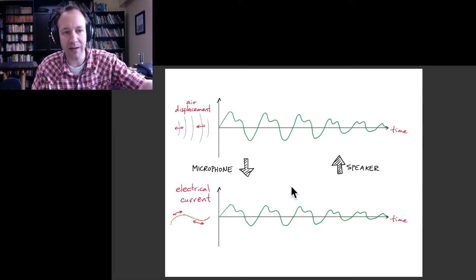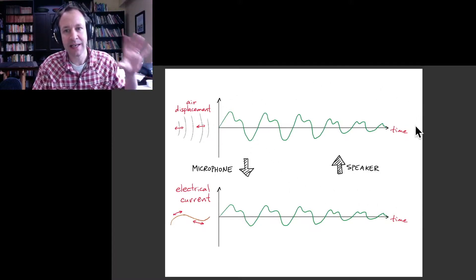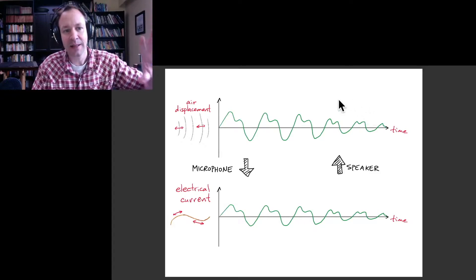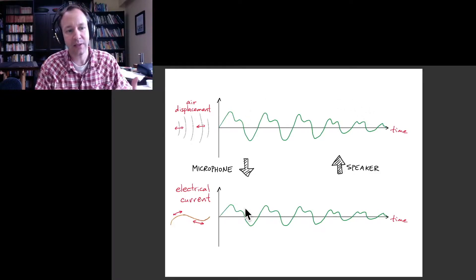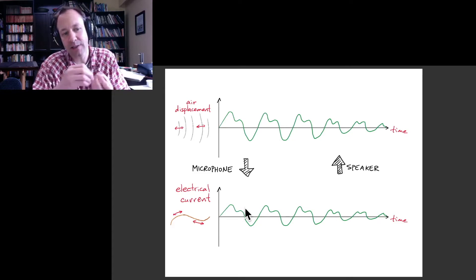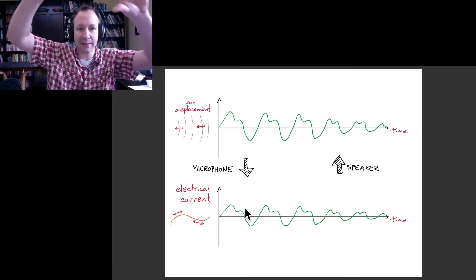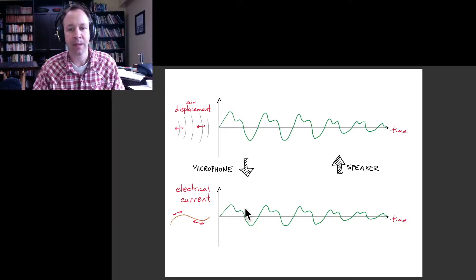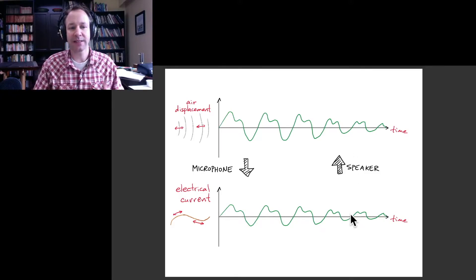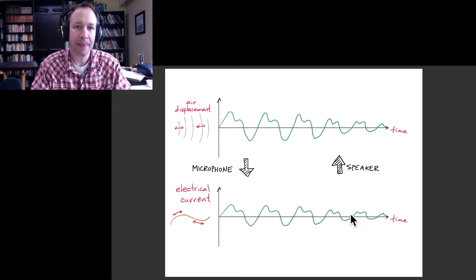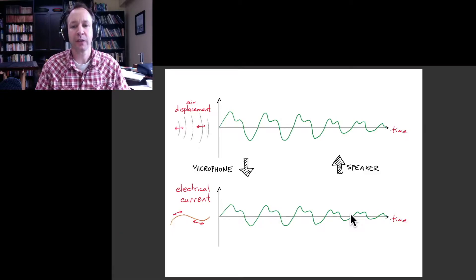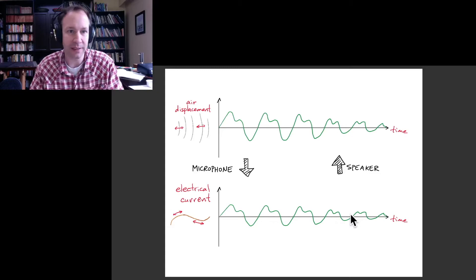That's really what the job of a microphone is: to take a sound in air and convert it into an electrical signal — a current that oscillates back and forth in exactly the same way that the air molecules in the sound wave were oscillating. A speaker does the opposite: it takes an electrical signal and converts it into a sound wave whose displacement versus time graph is the same as the current versus time graph in the electrical signal.